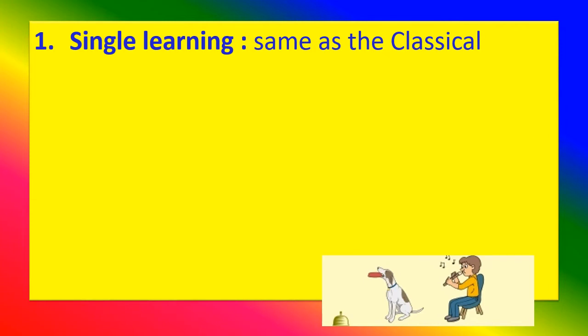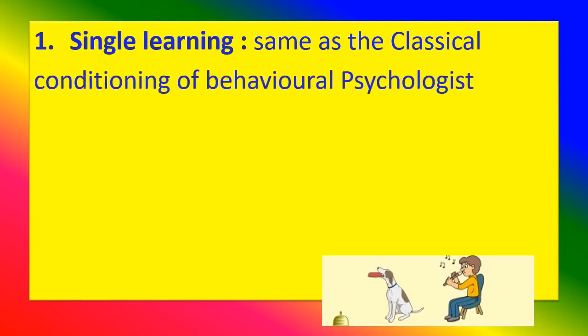Type 1: Signal Learning. Signal learning is the same as the classical conditioning of behavioral psychologists.